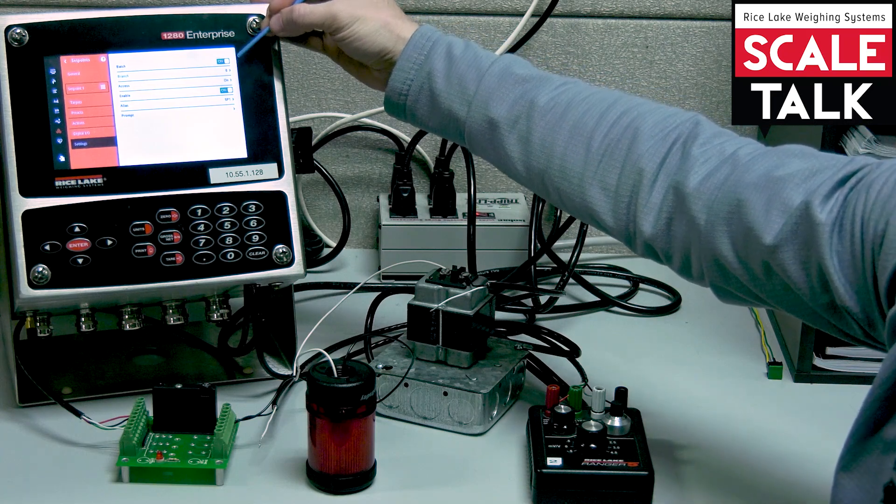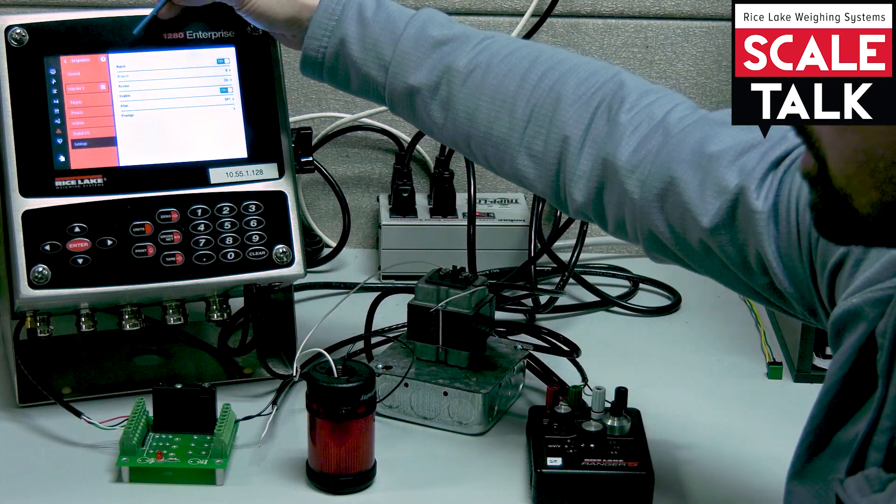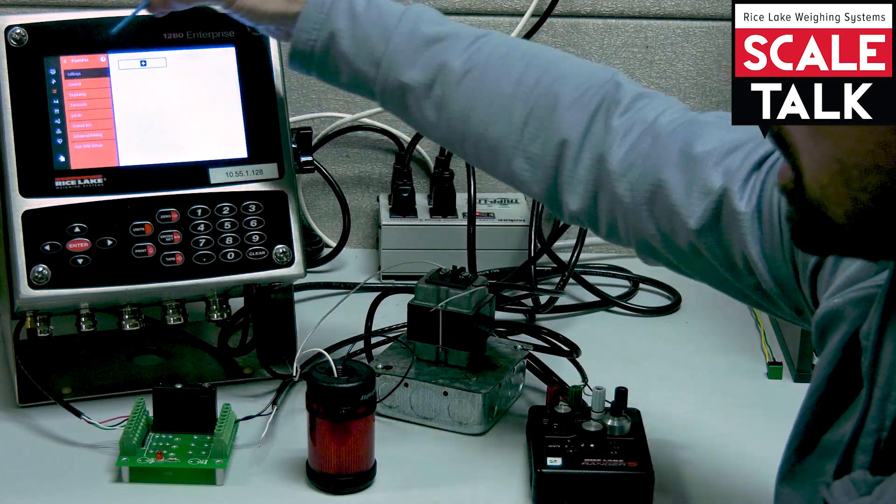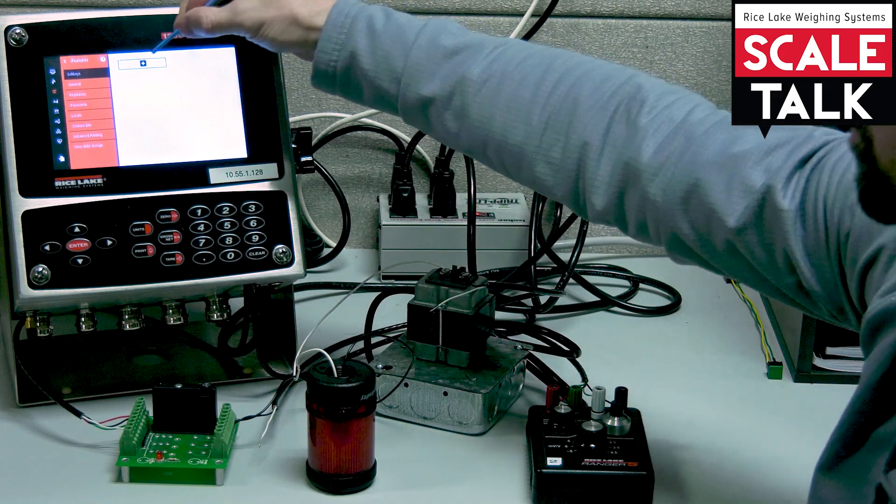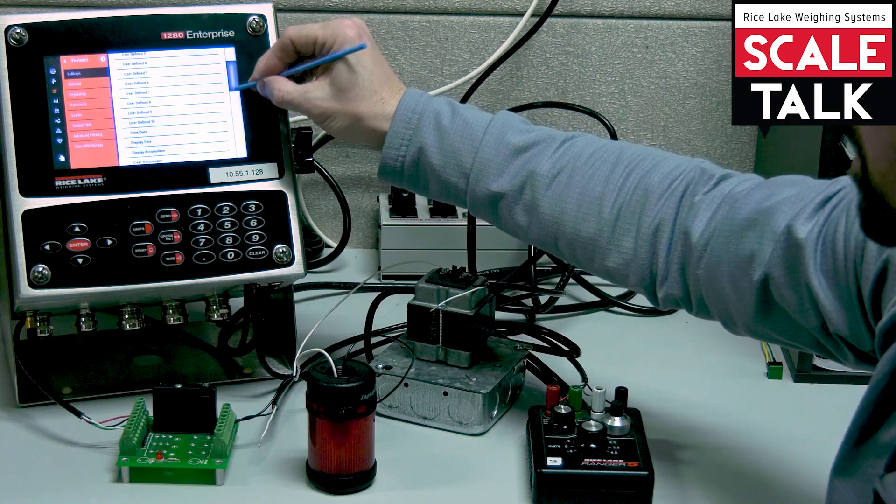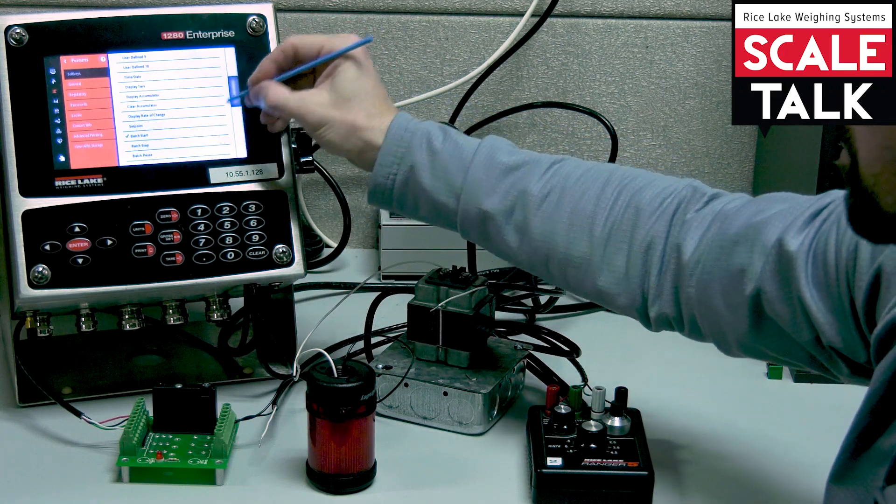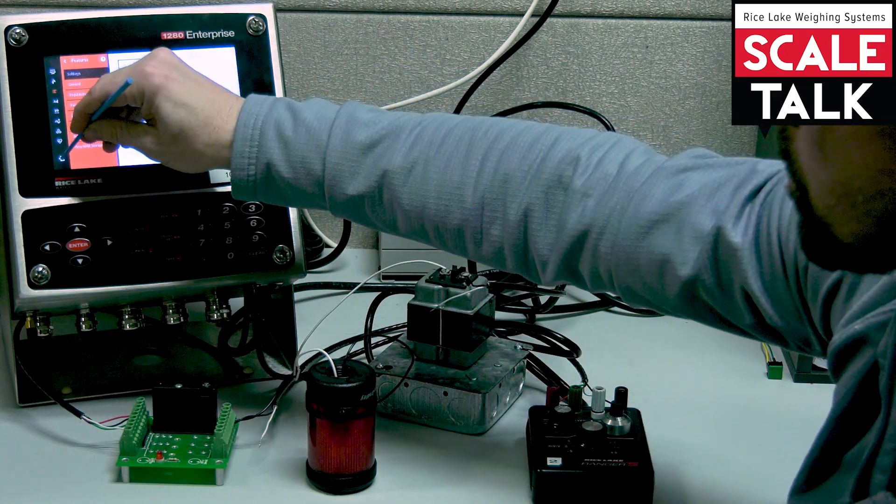Then there's one final thing we have to do to make this a batching set point. We need to have some sort of a way to start it. We have to tell it when to go. So I'm going to create a soft key here real quick that says batch start. There. Say done. Save and exit.